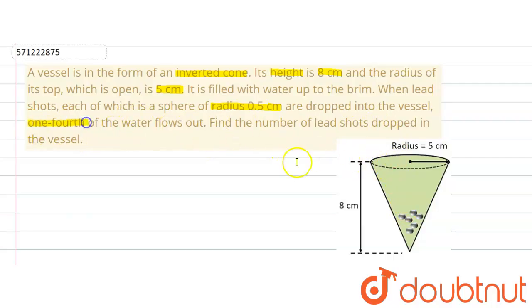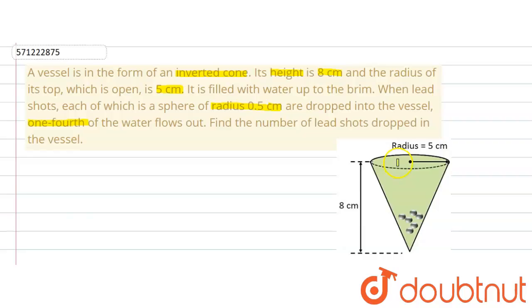When these shots were dropped into the vessel, one fourth of the water flowed out. We are asked to find the number of lead shots that have been dropped into the vessel.